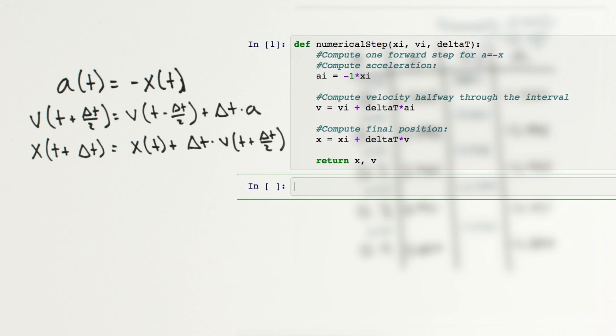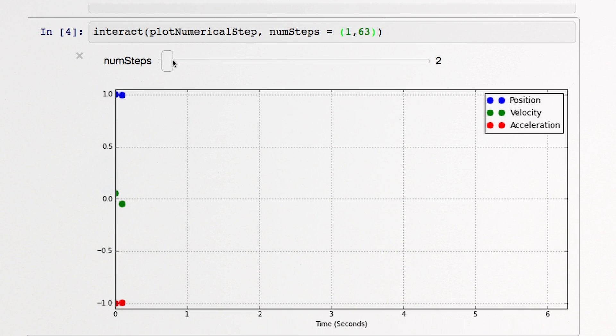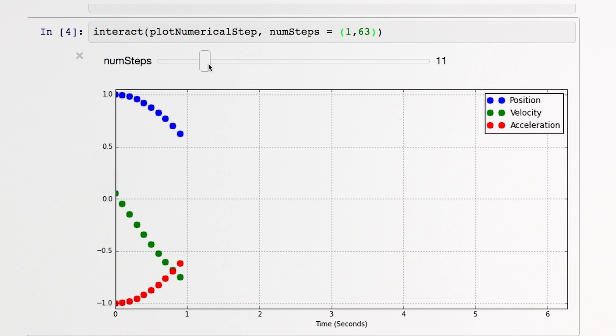We can now run our method over and over, each time using the output from the last step as the input to the next step. As we plot our results, we see our familiar waveform emerge.